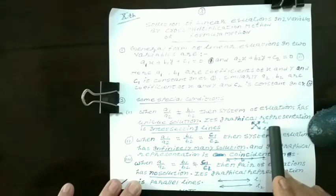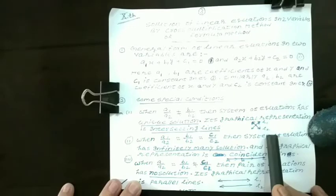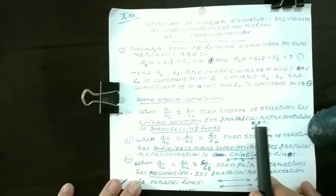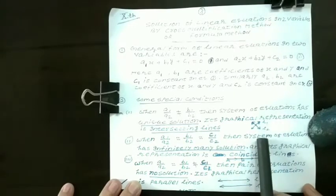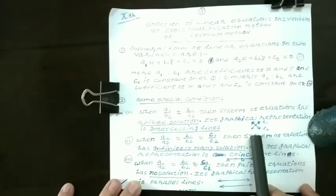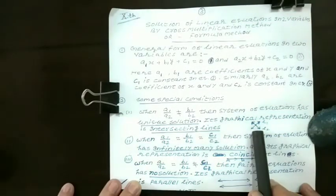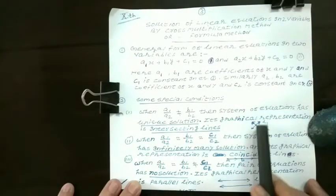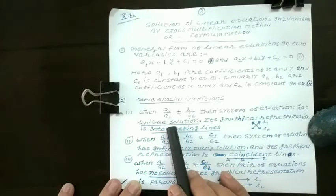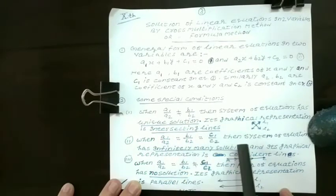L1 is one line represented by the first equation and L2 is the straight line represented by the second equation. If we draw these two equations in the form of lines in a graph, then they intersect at one point. So, for unique solution, the condition is a1 upon a2 is not equal to b1 upon b2.